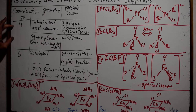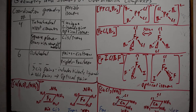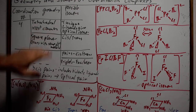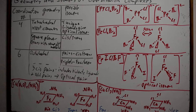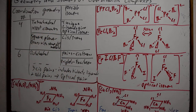If we have a coordination number of four — four donor atoms — we most commonly get a tetrahedral geometry. With tetrahedral geometry, there is only one possible type of isomer we can get: if we have four unique ligands, this gives us optical isomers, meaning a pair of optical isomers. Optical isomers are always a pair.